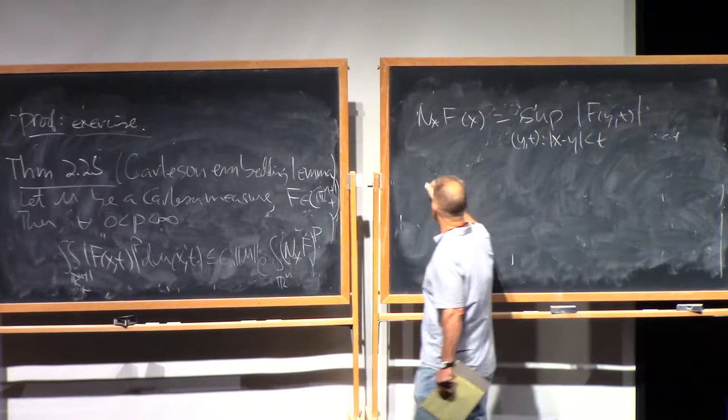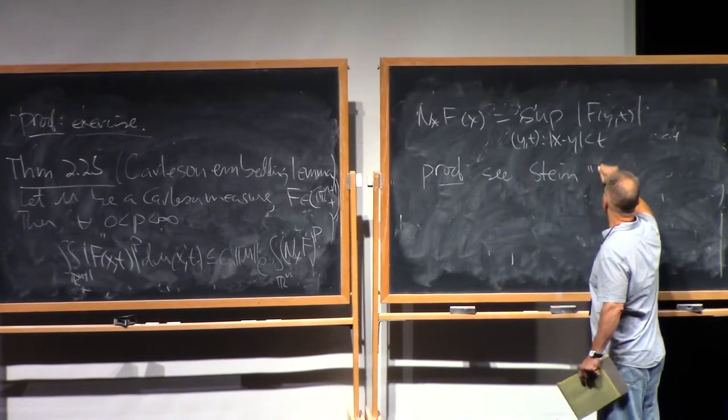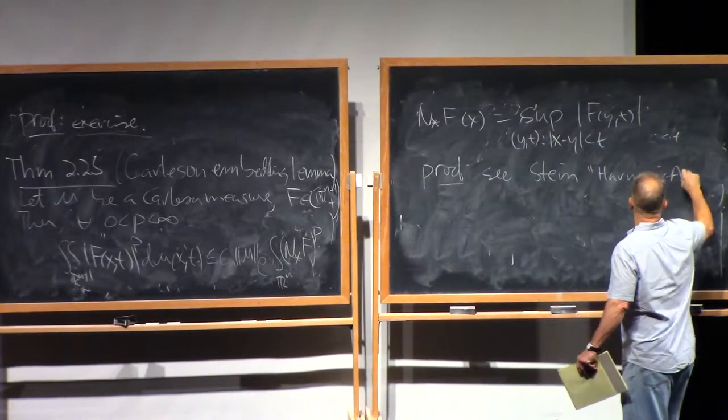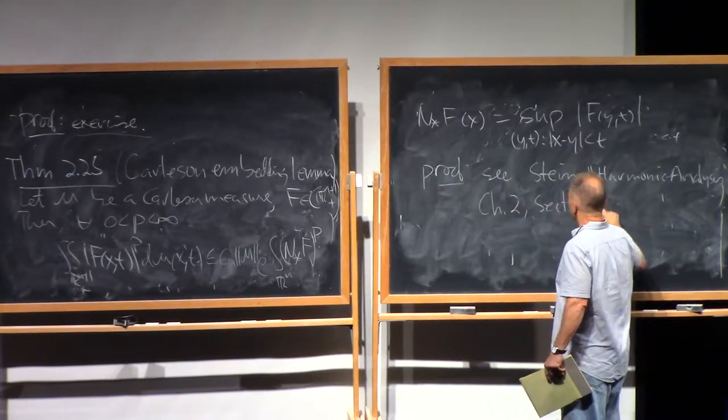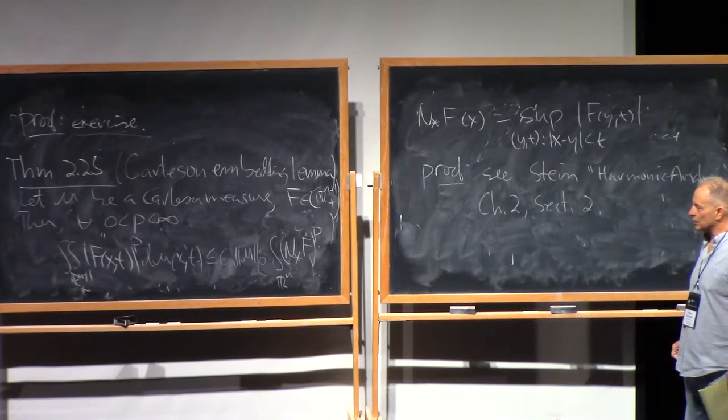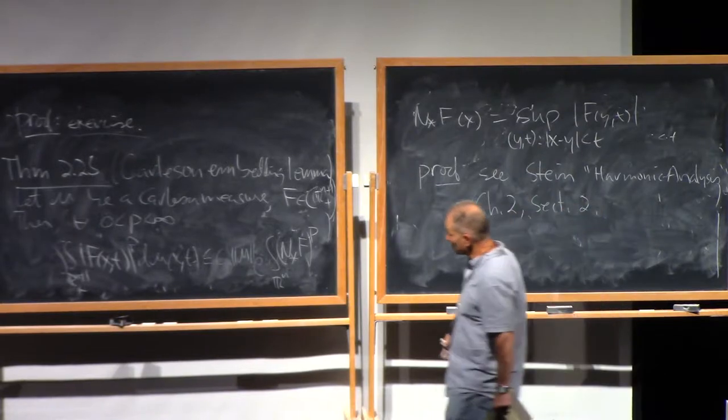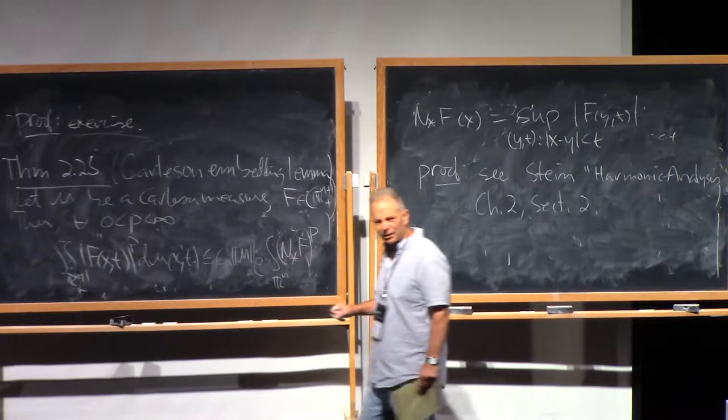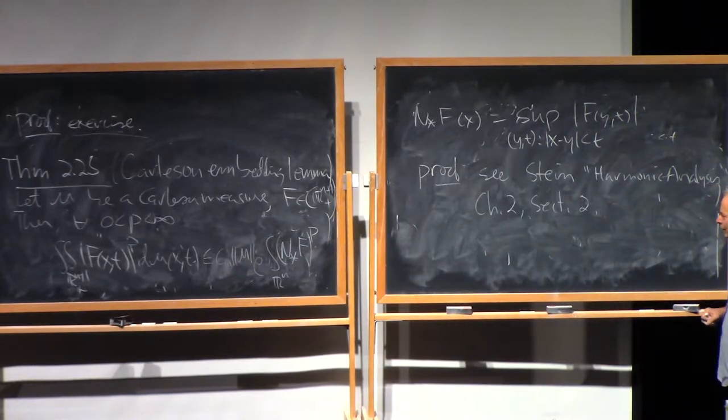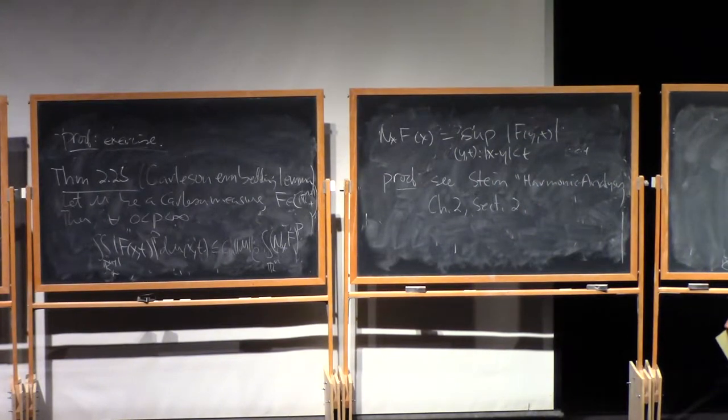And let me remind you that the non-tangential maximal function at a point X is the sup over Y,t in the cone with vertex at X. And I'm going to leave out the proof of this. You can find a proof, well, in many places, but for example, see the book of Stein entitled Harmonic Analysis, Chapter 2, Section 2. The proof uses, well, it's an exercise in the use of the Whitney decomposition lemma. Is Carleson embedding if and only if? You're asking if the conclusion here requires that mu be a Carleson measure? Yeah, I guess it does. Yeah, I think so. Never thought about that really, but probably it does. I only have ever needed it this way.